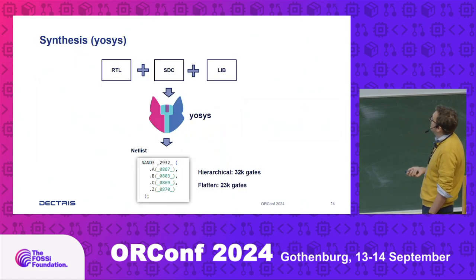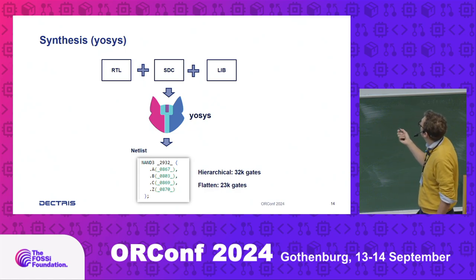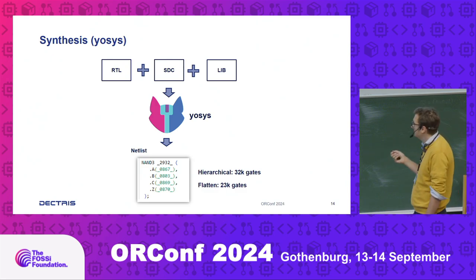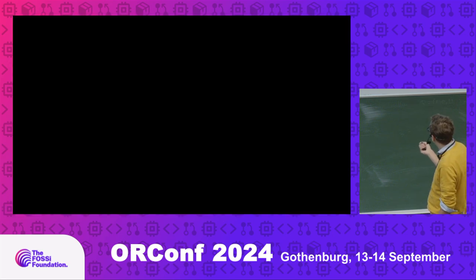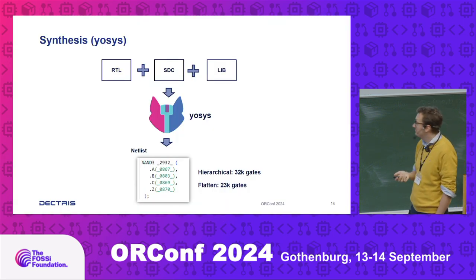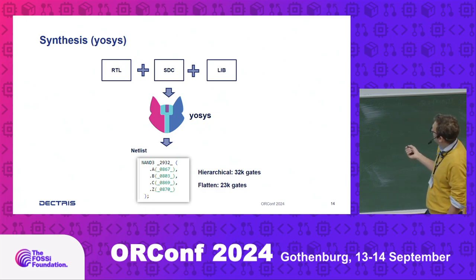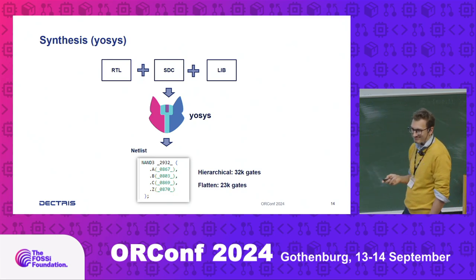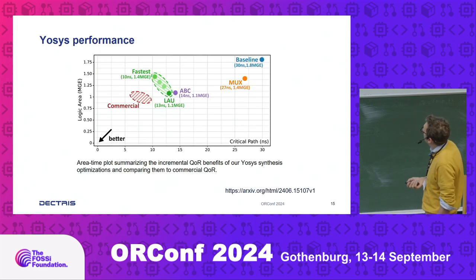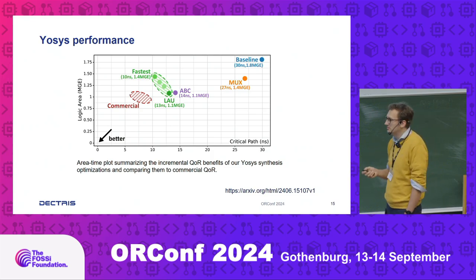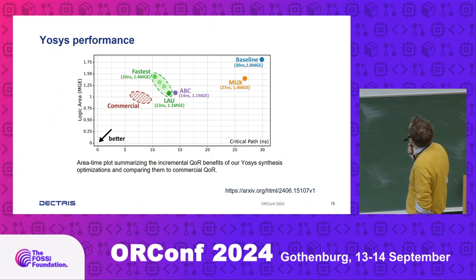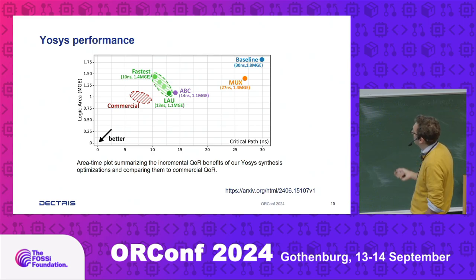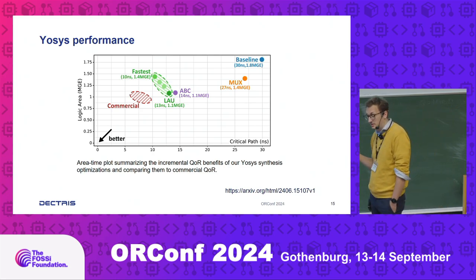First, we do synthesis: we take the RTL, the SDC, and the lib files, run through Yosys, and generate a netlist. First thing you realize in Yosys: if you flatten your design it will be 23 kilogates, but hierarchical will be 32, so use flat. The consequence of being flat is you get funny signal names and debugging later is painful. Yosys performance is slowly approaching commercial tools — from an ETH talk on a RISC-V core — there is still a gap but for many applications it's not really relevant to be at the top.